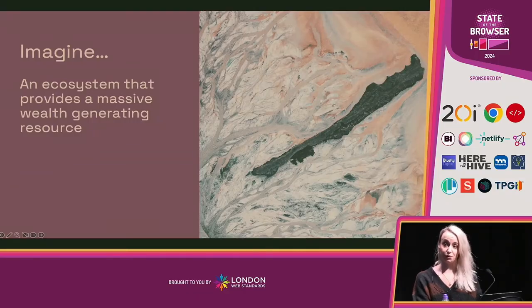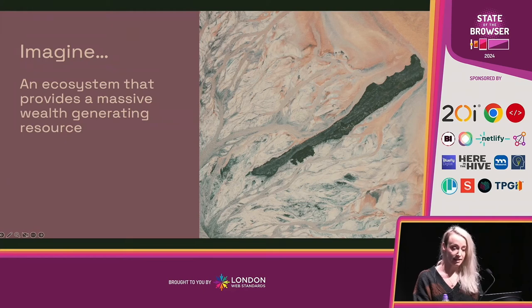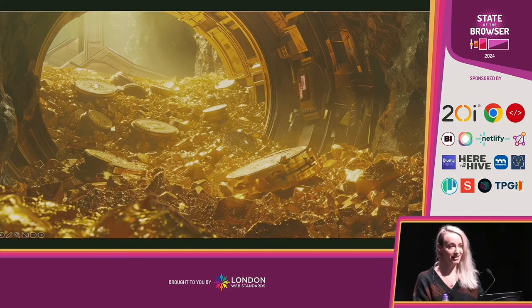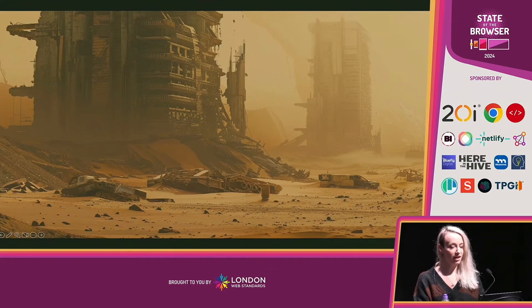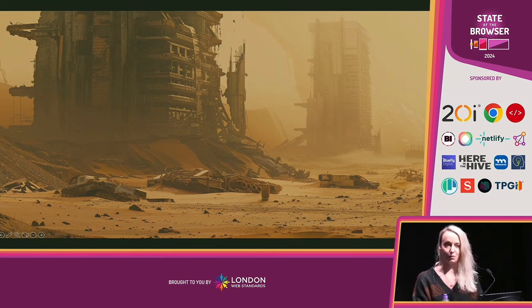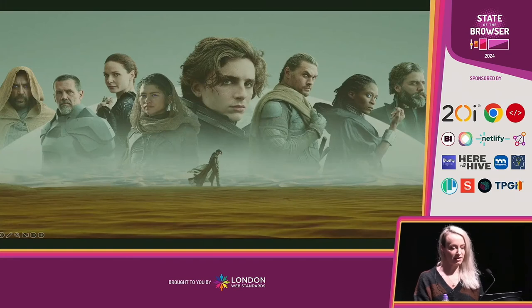I want you to imagine an ecosystem that provides a resource that is capable of generating massive amounts of wealth. People are constantly seeking this resource because of both the wealth it can provide and its beneficial properties to humans. It generates tens, if not hundreds of billions of dollars and enriches those who control it. And instead of pouring the profits back into the ecosystem and into the infrastructure of this place where great wealth comes from, it instead goes back to fund other things and make corporations richer. Now, some of you might be wondering — why is she giving us a high level overview of Dune? And what does that have to do with the web platform?